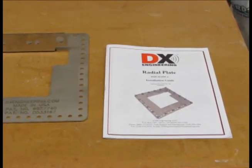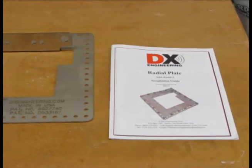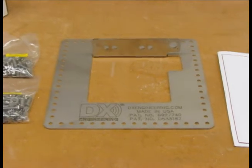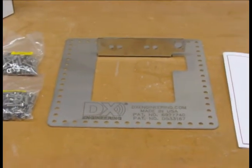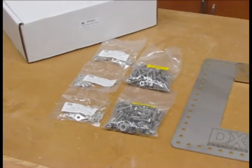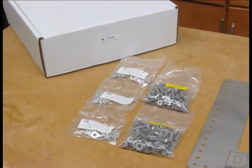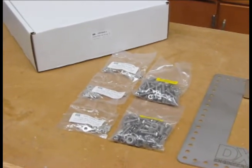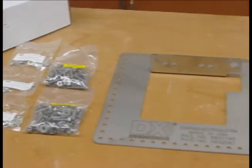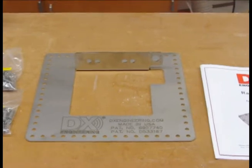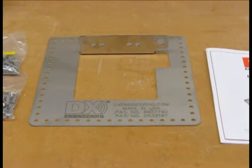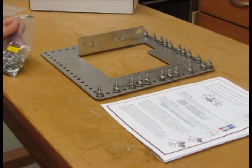Here is the DX Engineering radial plate for the vertical antenna. It came with one set of hardware, and I purchased an additional set so that I'd have enough for the intended number of radials we plan on putting up. I also got a package of eyelets for the radial wire and purchased two more of those. We'll be inserting the nuts, bolts, and washers into the plate and getting ready for installation.